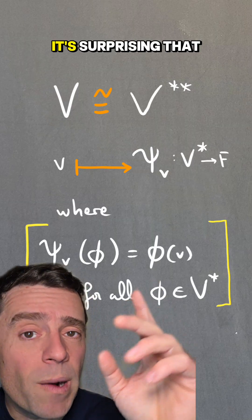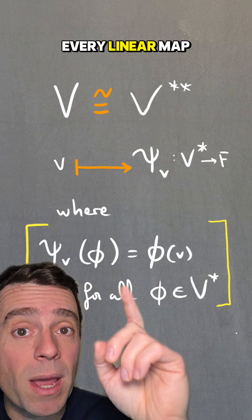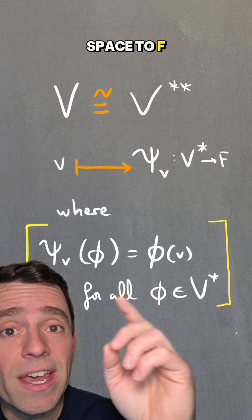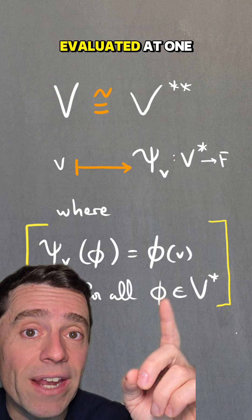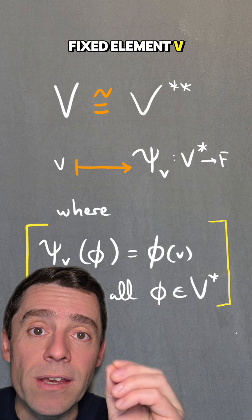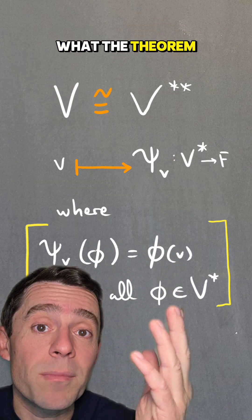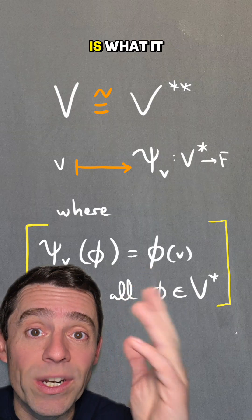It's surprising that every linear map from the dual space to F is actually just evaluated at one fixed element V. But this is what the theorem says. That isomorphism, that is what it says.